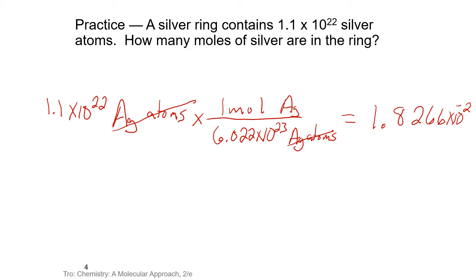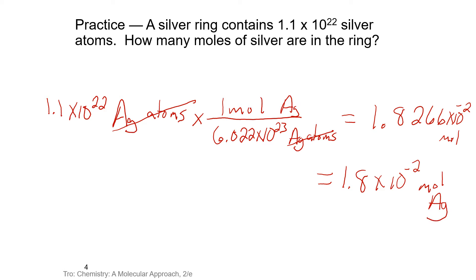When we look at significant figures, we started with two significant figures, so our answer should be reported with two significant figures. Now because the number we started with was less than one mole, our answer should be less than one — and this makes sense.